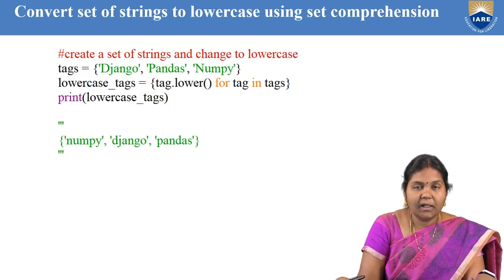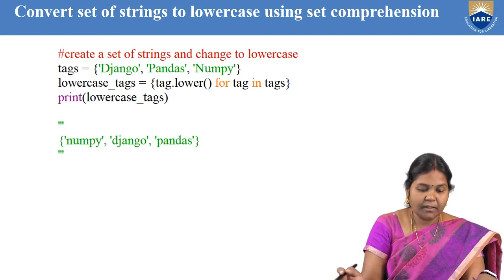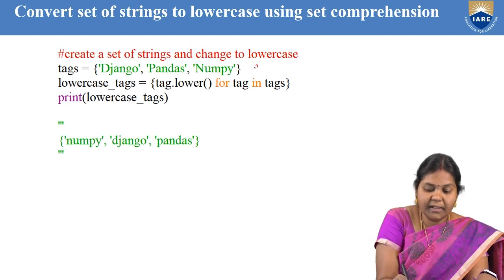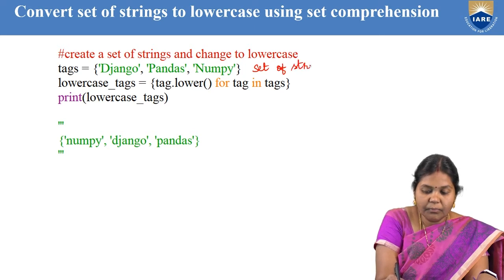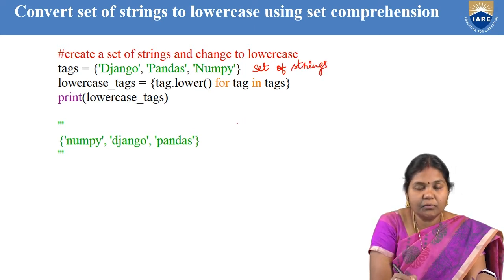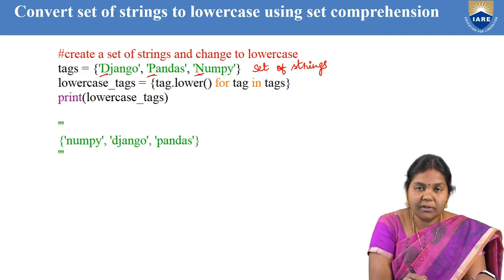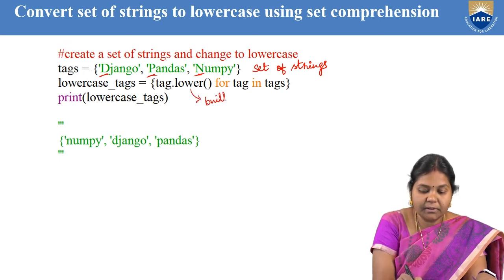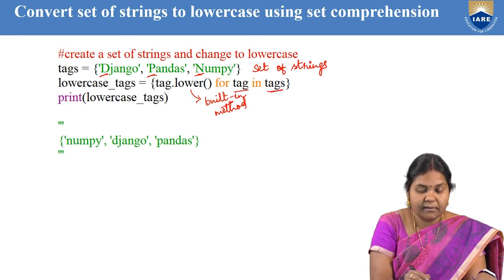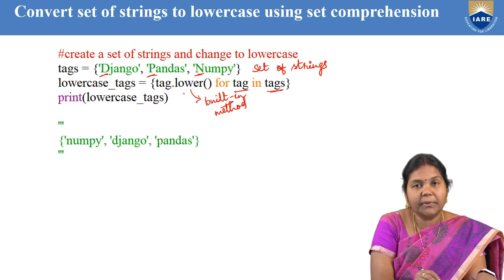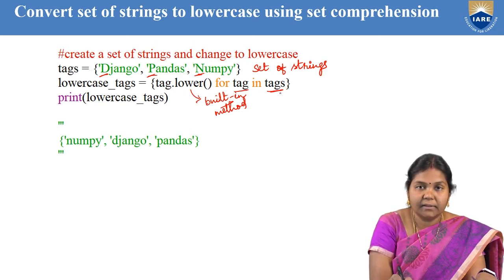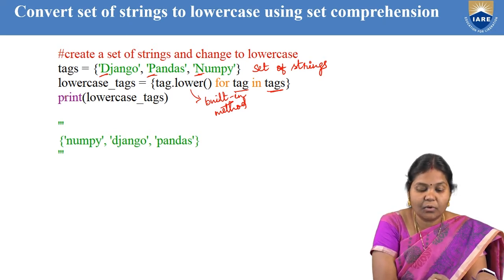Now let us go for a third example: convert a set of strings to lowercase using set comprehension. We take a set of strings where all the starting letters are capital. We need to read the strings one by one and convert them to lowercase using the built-in method lower(). The syntax is: {tag.lower() for tag in tags}, converting every tag in the set to lowercase and storing it in a new set called lowercase_tags.